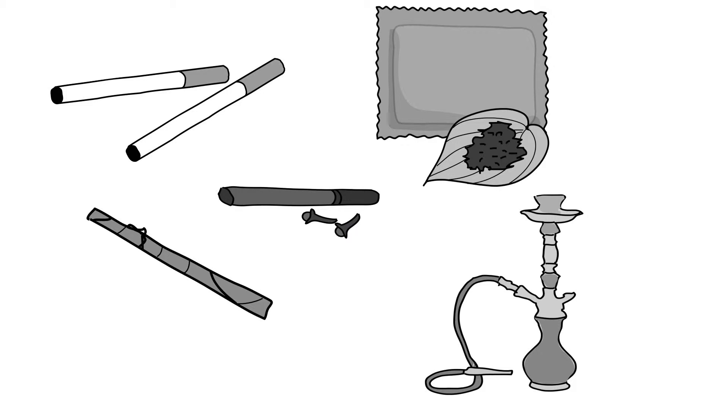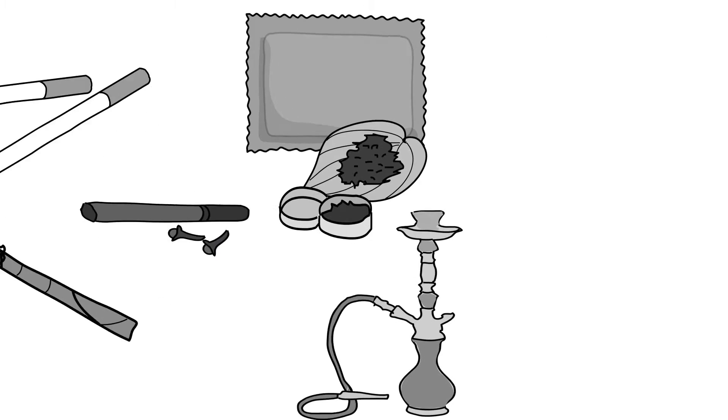Types of smokeless tobacco include chewing tobacco, such as zarda, gutka, and kaini, which are popular in India and Bangladesh, and moist snuff, which originated in Sweden, but is increasing in popularity globally.